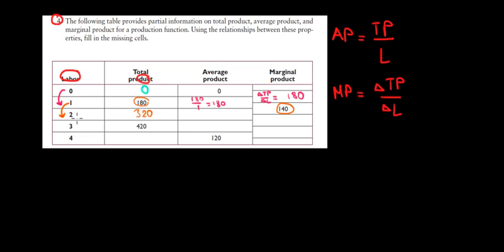And on average, for the two employees that we have, that's going to be 320 divided by two, that's an average of 160 average product.